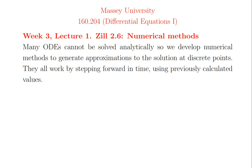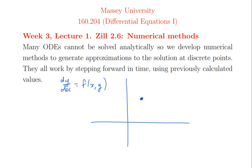We're going to consider a very typical problem: dy/dx equals f of x and y, and we may be given a starting value. Instead of getting a smooth curve — finding y as a function of x — we're going to approximate the solution at discrete points. So from the starting point we go to x1, y1, then x2, y2, x3, y3. The little subscripts indicate the time step; x0, y0 is the initial condition.